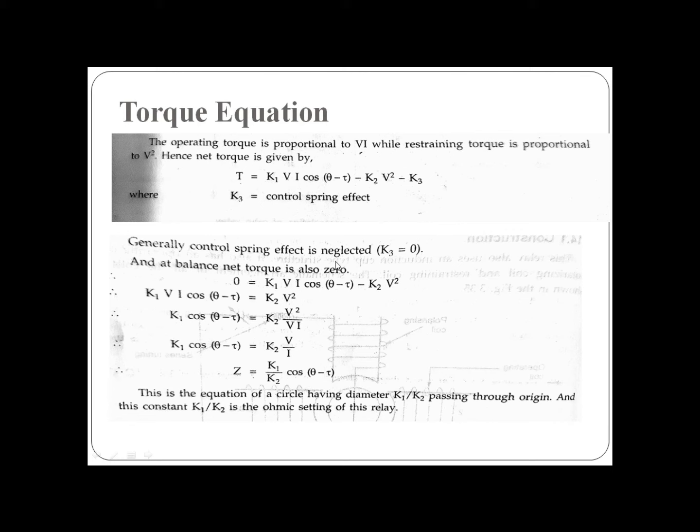Solving this equation: K₁ cos(θ - τ) = K₂V²/VI. Canceling I, we get V/I. Since V/I equals Z, we substitute Z into the equation.